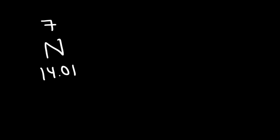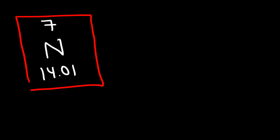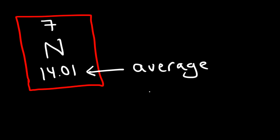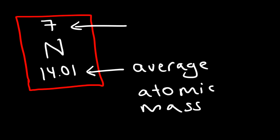Now let's discuss atomic structure. Looking at nitrogen (N) on the periodic table, it has an atomic number of 7 and an average atomic mass of 14.01. The average atomic mass reflects the weighted average of all isotopes of nitrogen. The mass number comes up when dealing with isotopes, but on the periodic table it's called the average atomic mass.